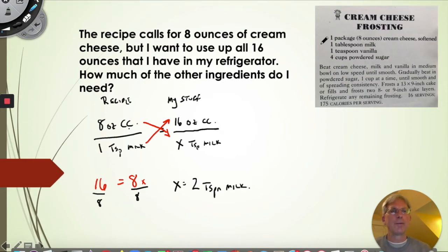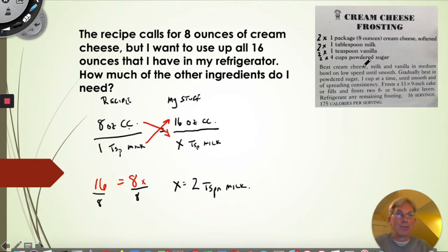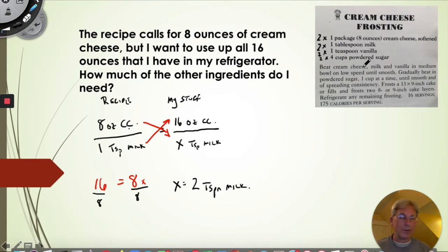If you're pretty sharp, you already realized that 16 is twice 8, so if I double my 8 ounces I have to double every single thing in the recipe. You could take the shortcut and say I need 2 tablespoons of milk, 2 teaspoons of vanilla, and 8 cups of powdered sugar. But as these problems get harder and more like chemistry, you won't see that right away. I want you to develop a mathematical method now while the problems are simple so you can do them in your head and get the technique down before we move forward.